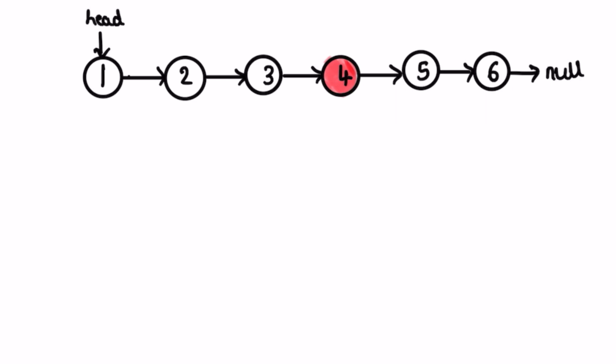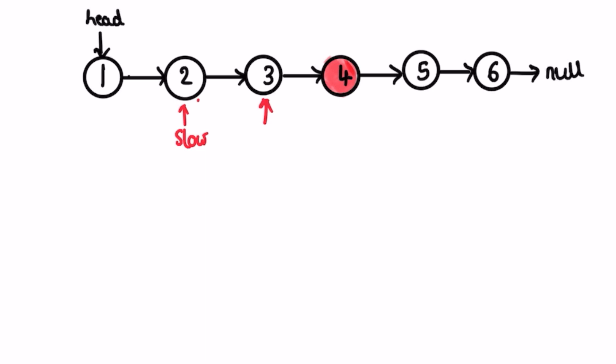Now let's look at the second example — we added an extra node at the end, six, which points to null. We start the same process: slow and fast both point to head, and the loop runs until fast is not null and fast.next is not null. In the first iteration, slow moves to slow.next and fast moves to fast.next.next.